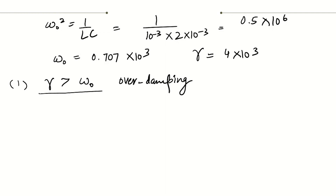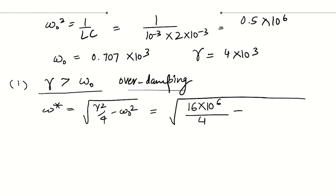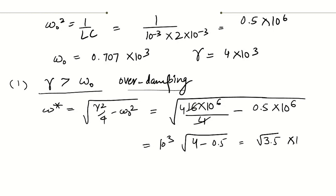Our gamma value is 4×10³ and omega naught is 0.707×10³. Since gamma is greater than omega naught, this is an overdamped case. Let's find the damped oscillation frequency ω* = √(γ²/4 − ω₀²). Substituting: γ²/4 = 16×10⁶/4 = 4×10⁶, and ω₀² = 0.5×10⁶. So ω* = 10³·√(4 − 0.5) = √3.5 × 10³.